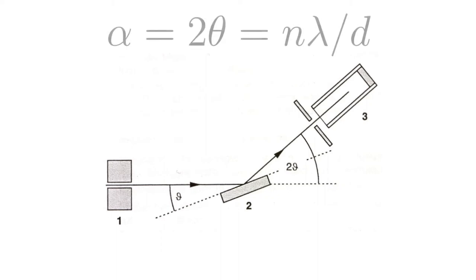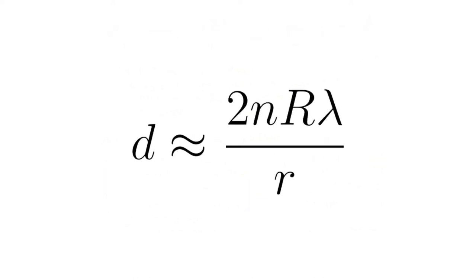From these two equations and the fact that the deflection angle of the electrons is twice the angle of incidence on the graphite crystal, alpha equals 2 theta equals n times lambda divided by d, follows d is approximately 2n large R times lambda divided by small r.